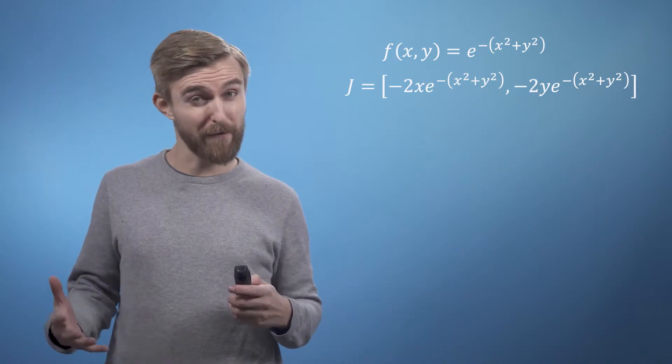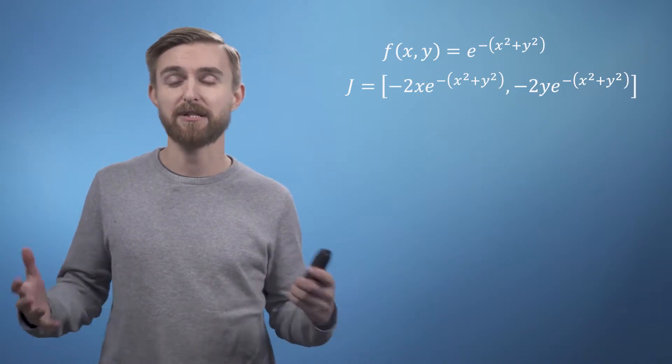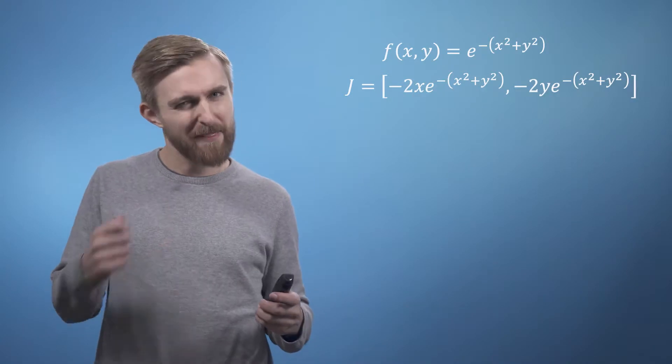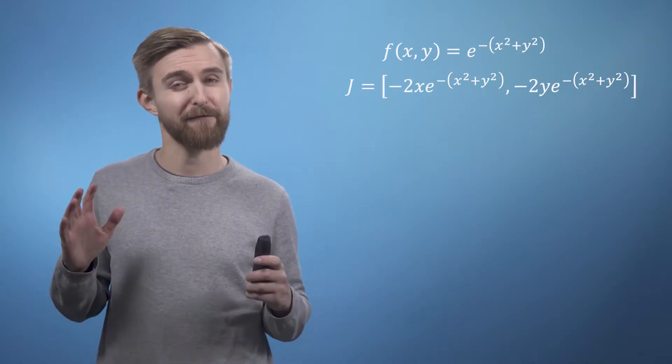So we're now going to do the reverse of our approach from the last time and start by looking at the vector field of the Jacobians, then see if we can understand how the function must look.